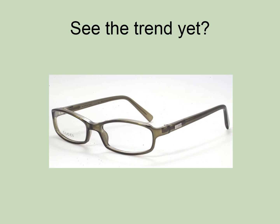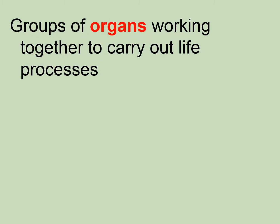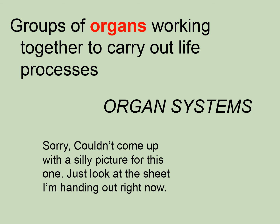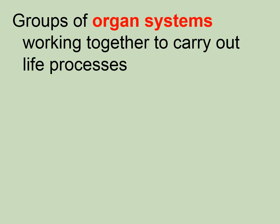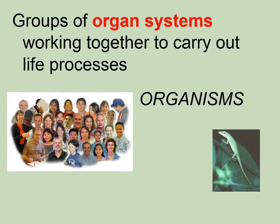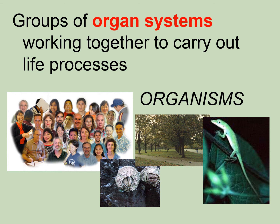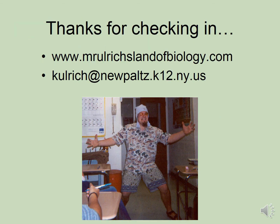I hope you're seeing the trend in these definitions. The next level of organization involves groups of organs working together to carry out different life processes — these are organ systems. You can go to MrUlrichsLandofBiology.com or Google 'human organ systems' to find that information. We put organ systems together to make individual organisms, and we can continue from there into populations, communities, ecosystems, and beyond — but we'll save that for ecology.